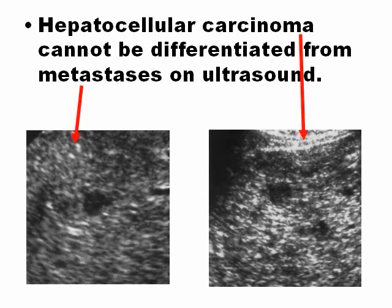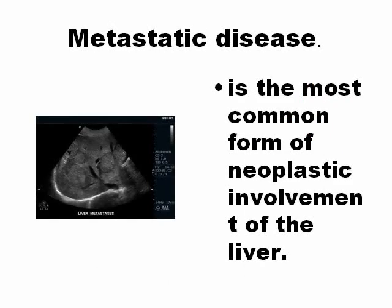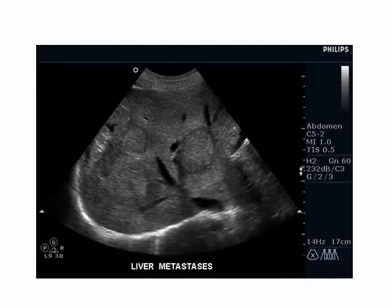Hepatocellular carcinoma cannot be differentiated from metastasis by ultrasound alone — this is the function of biopsy. You cannot say by ultrasound whether a liver cancer is primary or a metastasis from another organ. Metastatic disease is the most common cancer found in the liver — the most common neoplastic involvement of the liver is metastasis, more common than primary cancers. You can see here a liver with multiple nodules.